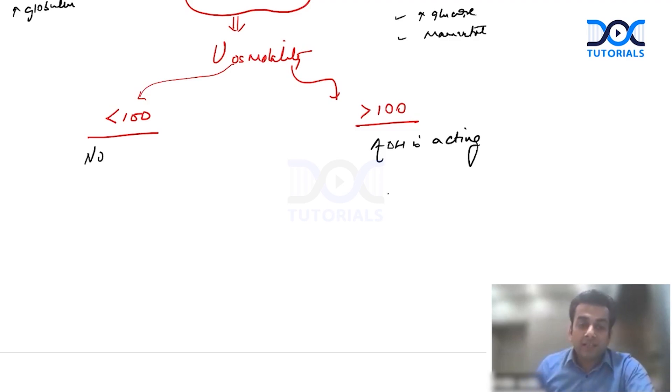It means there is no ADH. Why, sir? Either you have had so much of water that you have suppressed the ADH totally, like in the case of polydipsia, or you are consuming such a low solute diet that ADH is not able to act, for example beer potomania.